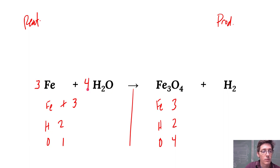I need to quadruple my water. It's the only way to get up to four oxygens over here in the reactant side. So I've got three irons, four oxygens, but I now have eight hydrogens. So let's update this and come back over to the products.